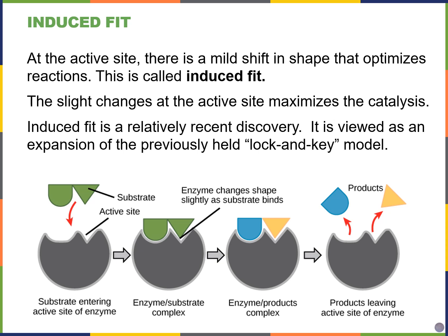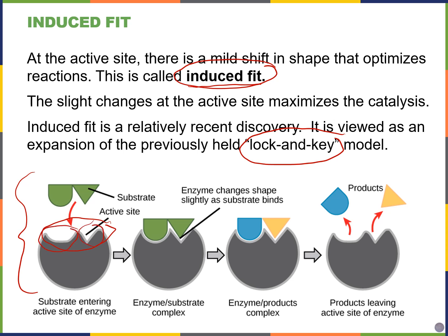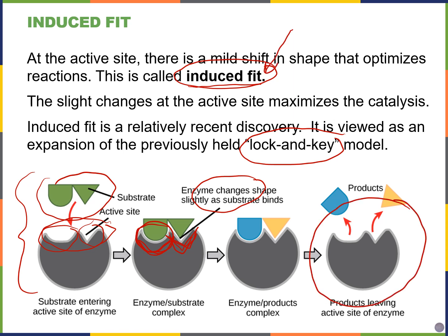Scientists used to think enzymes had to perfectly fit their substrates through what was called the lock and key model. But now we know that's not always the case — sometimes there's a shift in the enzyme's shape to accommodate the substrate, and that's called induced fit. The pockets of the active site don't perfectly fit the substrate initially, but when the substrate binds, the active site changes shape — for example, getting a deeper pocket or a broader opening. Importantly, at the end of the catalyzed reaction, enzymes always return to their original state in order to continue catalyzing the same reaction over and over again.